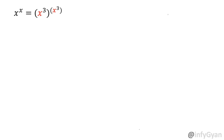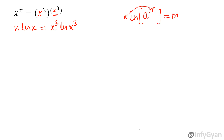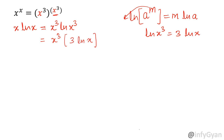Let us begin this question by taking log on both sides. The equation will be x ln x on the left. Taking natural log, and on the right side x cube to the power x cube — by the property of log, if we have a raised to the power m and take ln, then m comes down: m ln a. So x cube is the exponent and comes down, giving x cube ln x cube. Now ln x cube: the 3 comes down, giving 3 ln x. So the right side becomes x cube times 3 ln x, equal to x ln x on the left.